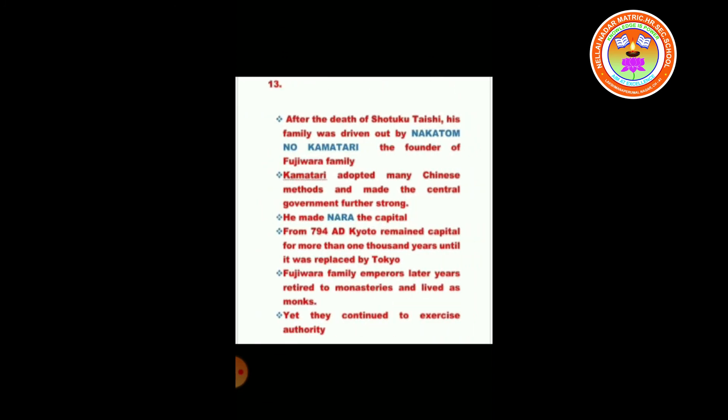Shotoku Taishi was the leader — he made the central government strong. After his death, his family was driven out by Nakatomi no Kamatari, the founder of the Fujiwara family. Kamatari adopted many Chinese customs and made the central government stronger. He made Nara the capital. From 794 AD, Kyoto remained capital for more than a thousand years until it was replaced by Tokyo.